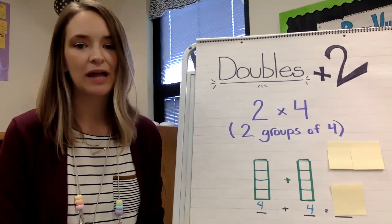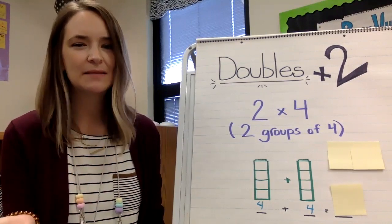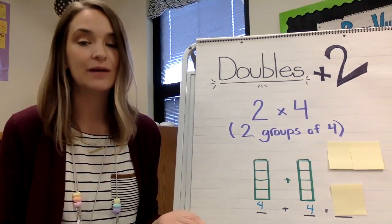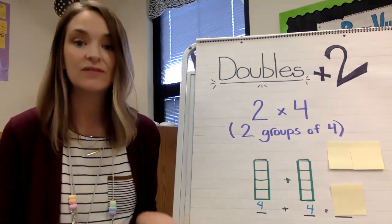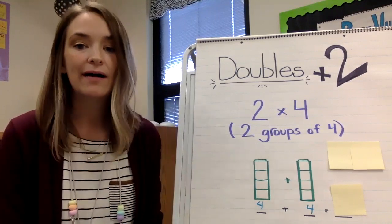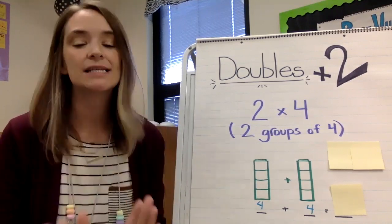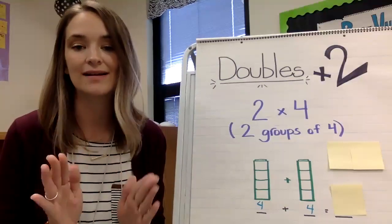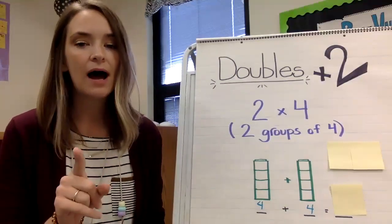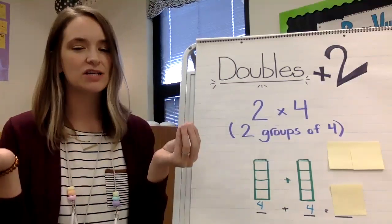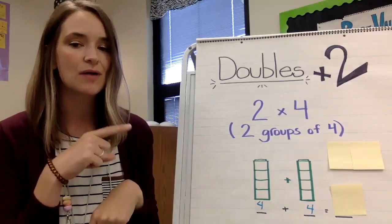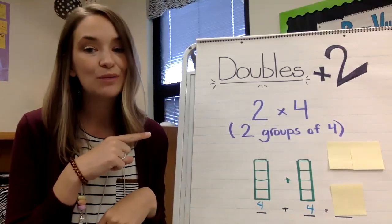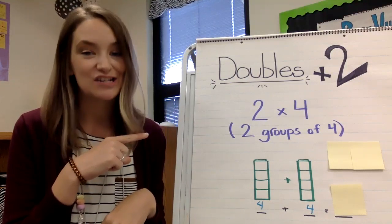Now you may be wondering why am I spending my time thinking and talking about the double strategy when I may already have a strategy of counting by twos? Well, counting by twos is a fantastic strategy and if it works for you for your basic facts, keep that up. But I want you to open up your mind to the possibilities of how this strategy of doubling may be able to help you when you begin multiplying multi-digit numbers.